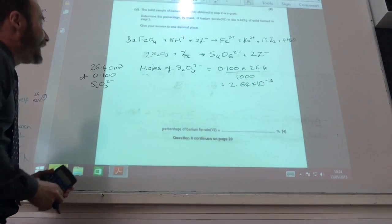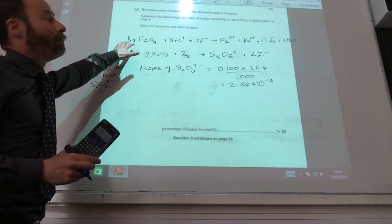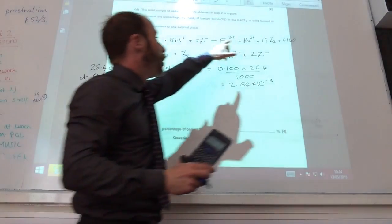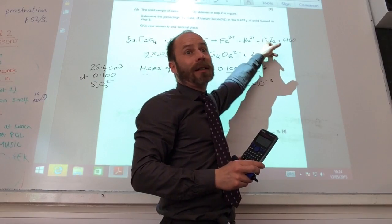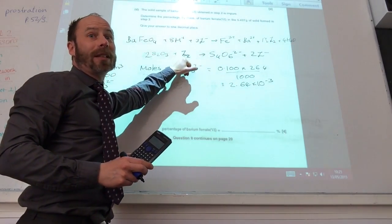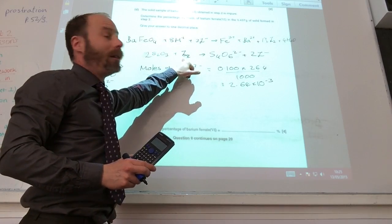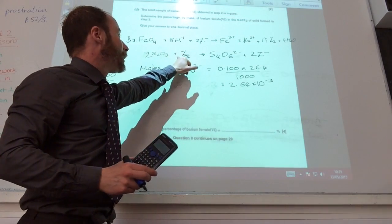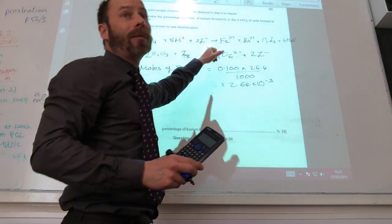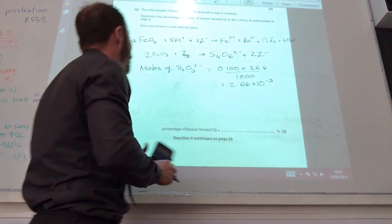That comes to 2.64 times 10 to the minus 3. Now, I want to relate that to the moles of barium ferrate(VI). One of those gives me one and a half of iodines, but I've only got one iodine there. So if I times it by two, I've ended up with two iodines there.